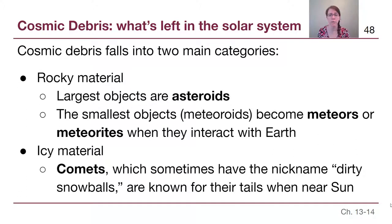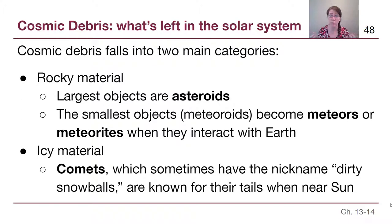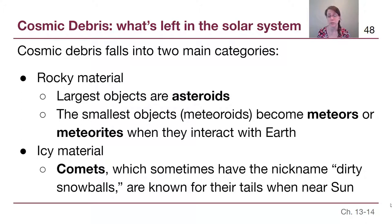Comets sometimes have the nickname 'dirty snowballs' because they are a mix of ices of different types as well as dust and more complex molecules that couldn't have built themselves into rocky material if they were closer to the Sun in the early Solar System. Comets and asteroids are really the leftovers that didn't get built into planets.